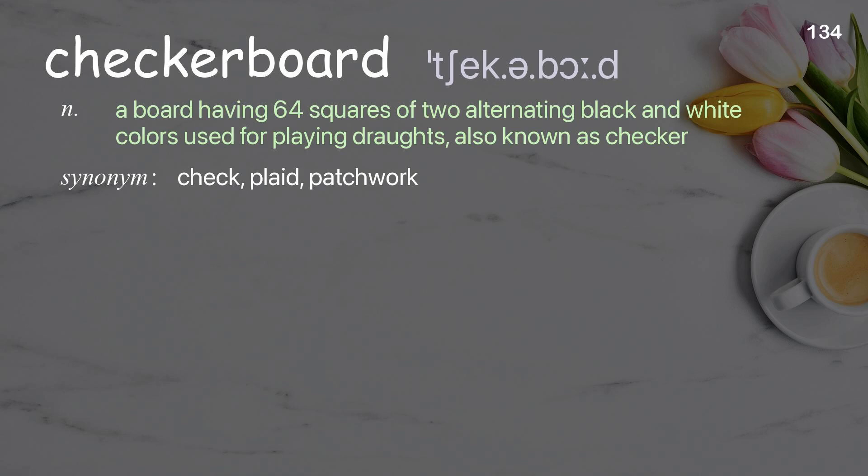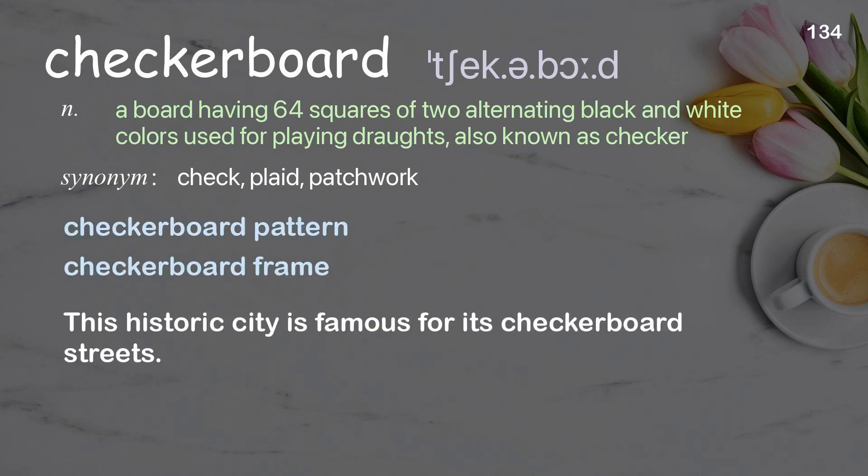Checkerboard: a board having 64 squares of two alternating black and white colors, used for playing drafts, also known as checkers. Examples: checkerboard pattern, checkerboard frame. This historic city is famous for its checkerboard streets.